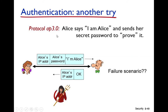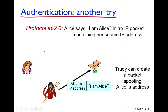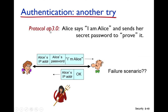Now we are going to discuss another protocol used for authentication called Protocol AP 3.0. It is a better version than Protocol AP 2.0. In this protocol, Alice sends her password along with the message 'I am Alice' and her IP address. This password is only known to Bob.